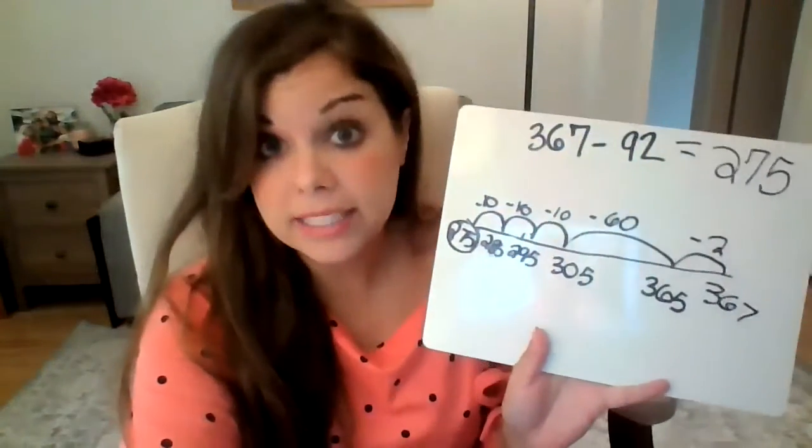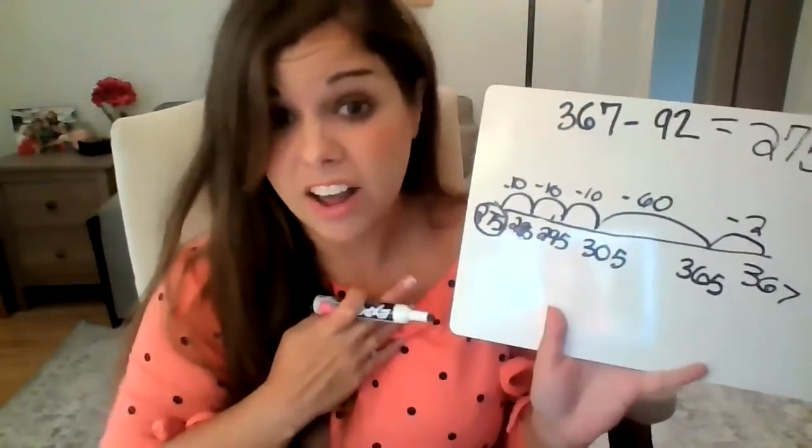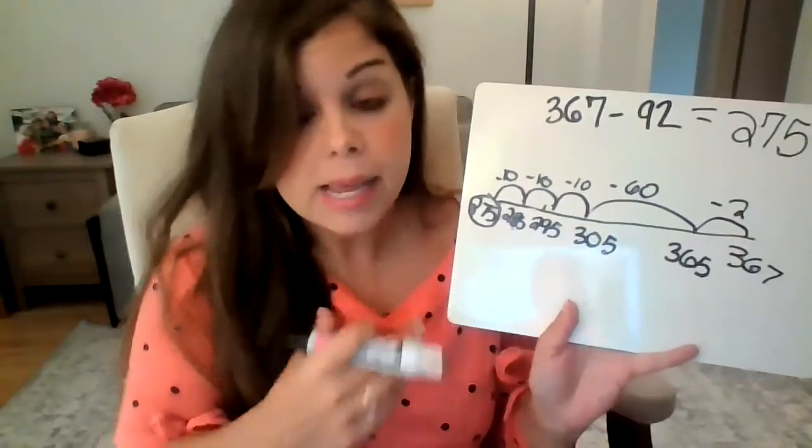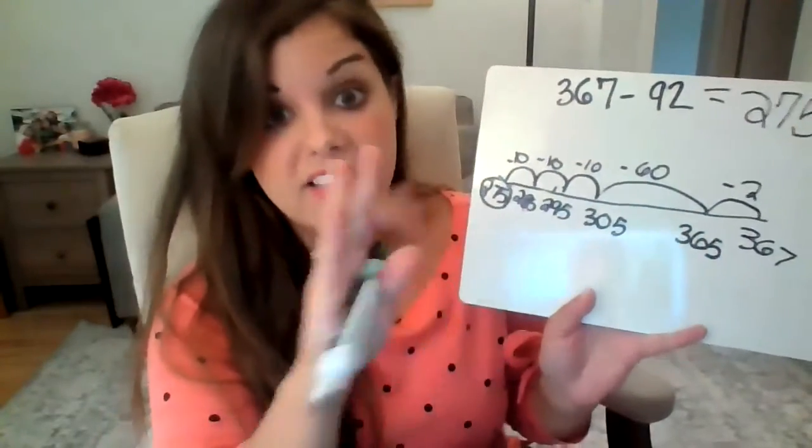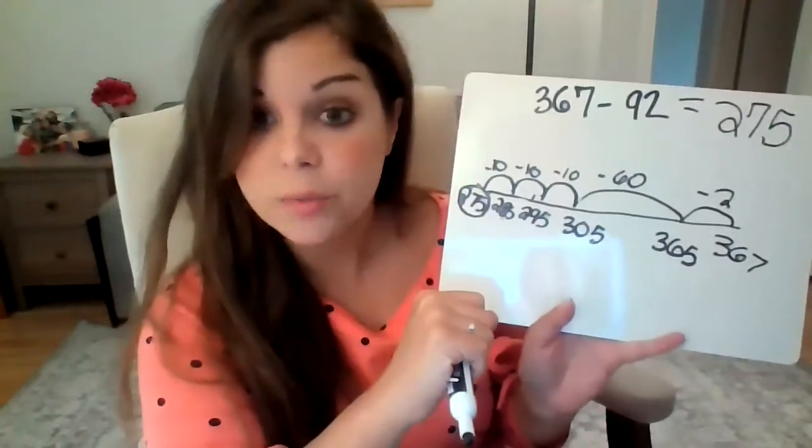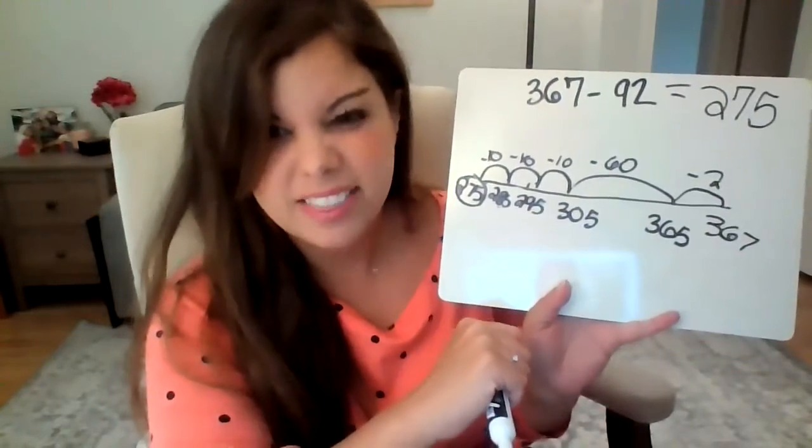What's important about number lines is to remember that mine might not look like yours and that's okay. Maybe you jumped by nine groups of 10. And that's fine too. As long as you end up at your answer, then you're fine.